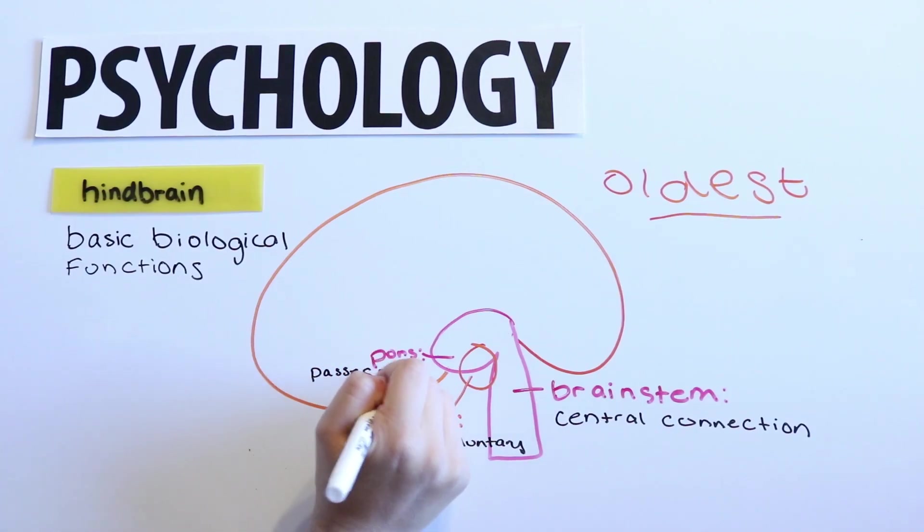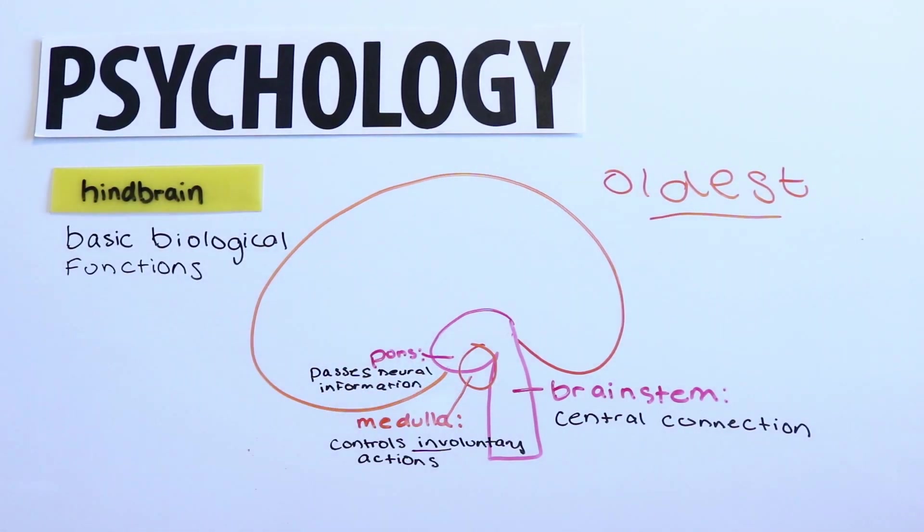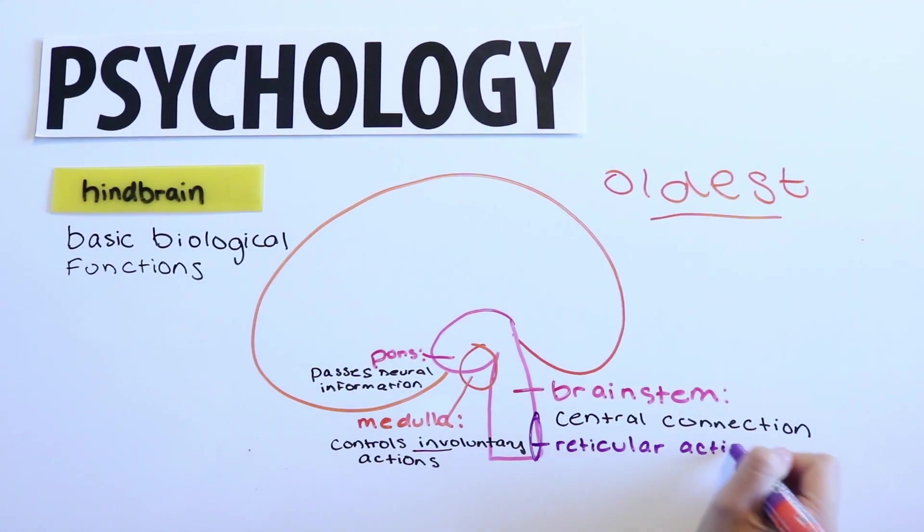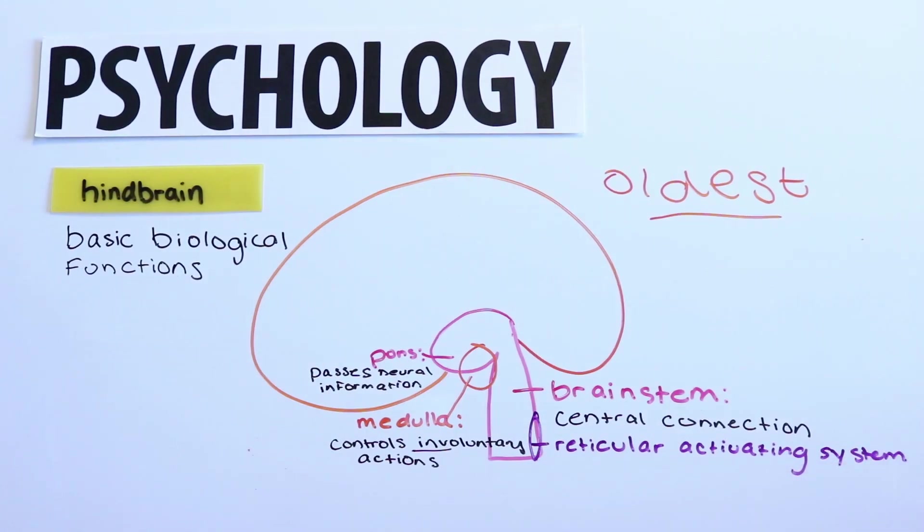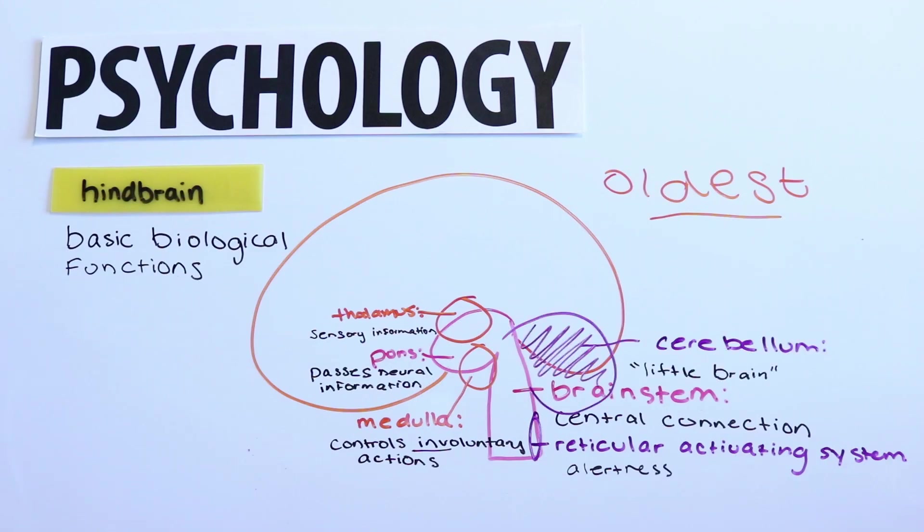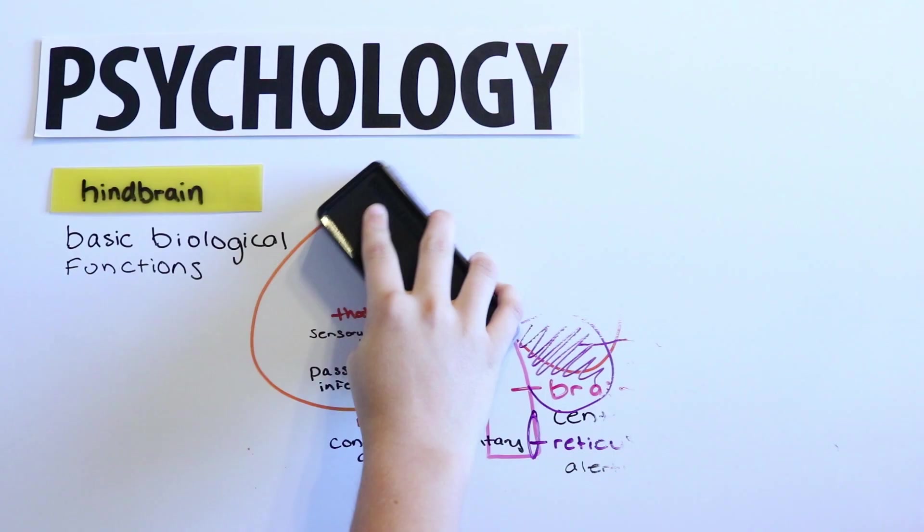The pons, which passes neural information between the three brain regions and helps coordinate movement, such as facial expression, the reticular activating system that controls arousal or our alertness, the thalamus, which receives and relays sensory information, and our cerebellum, which means little brain because it controls many important things like muscle movement, balance, and emotions, and because it looks like a literal little brain attached to the underside of our hindbrain.